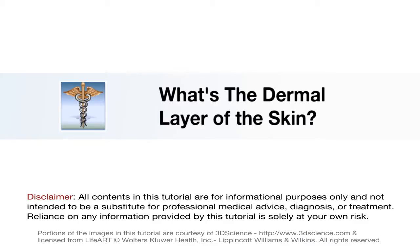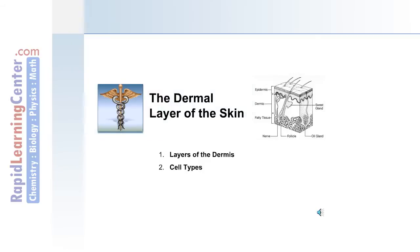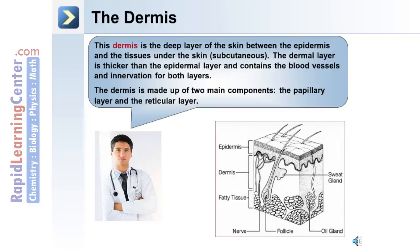Now let's move on to discuss the dermal layer of the skin, including the different layers and cell types found there. The dermis is the deeper layer of the skin between the epidermis and the underlying tissues of the subcutaneous layer. The dermal layer is thicker than the epidermal skin and contains the blood vessels and innervation for both layers. The dermis itself is made up of two main layers: the papillary layer and the reticular layer.